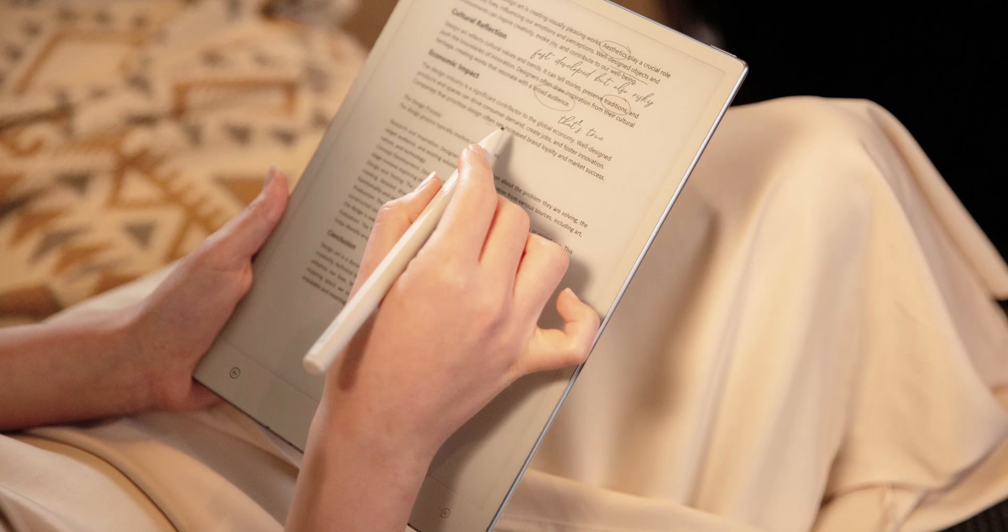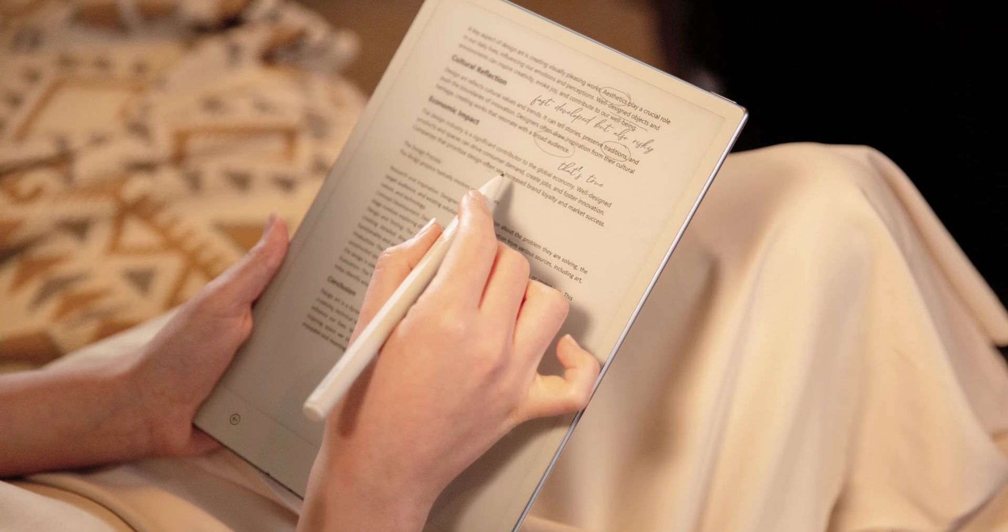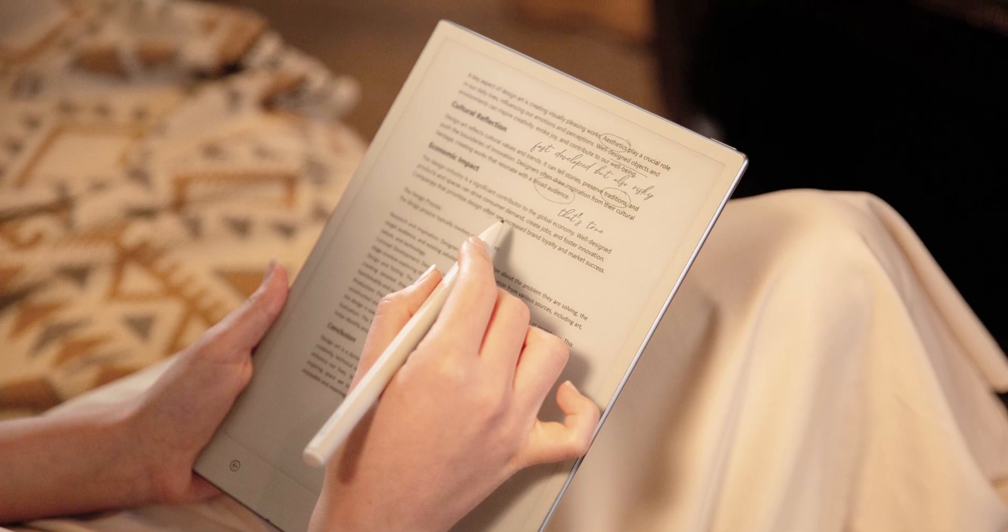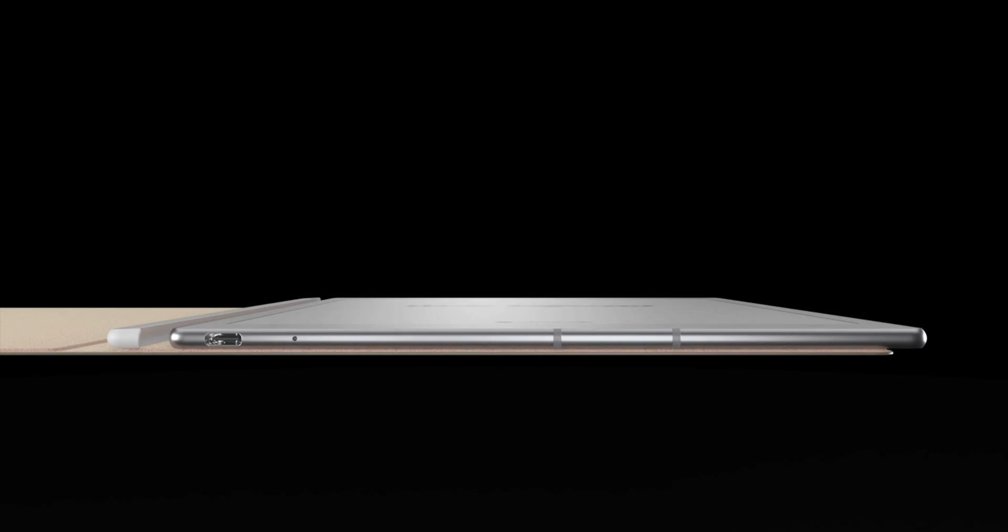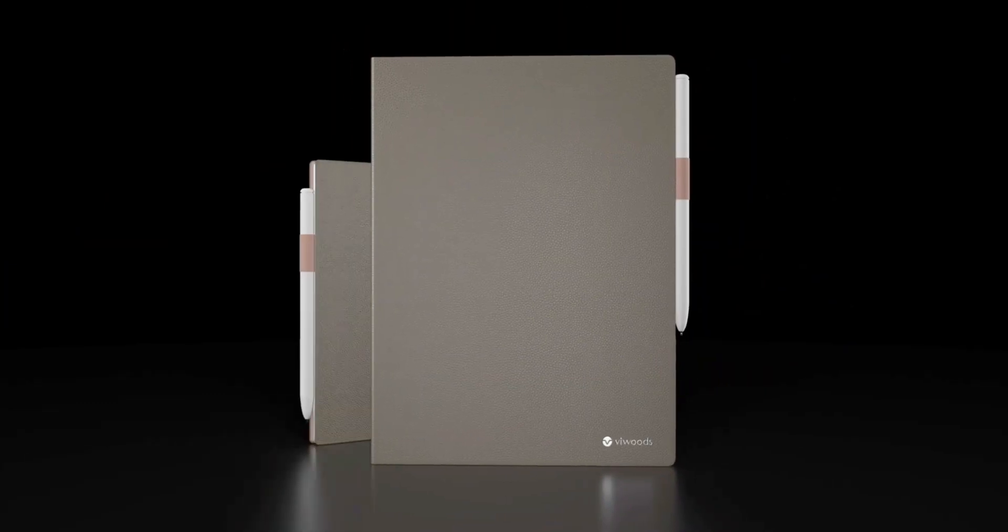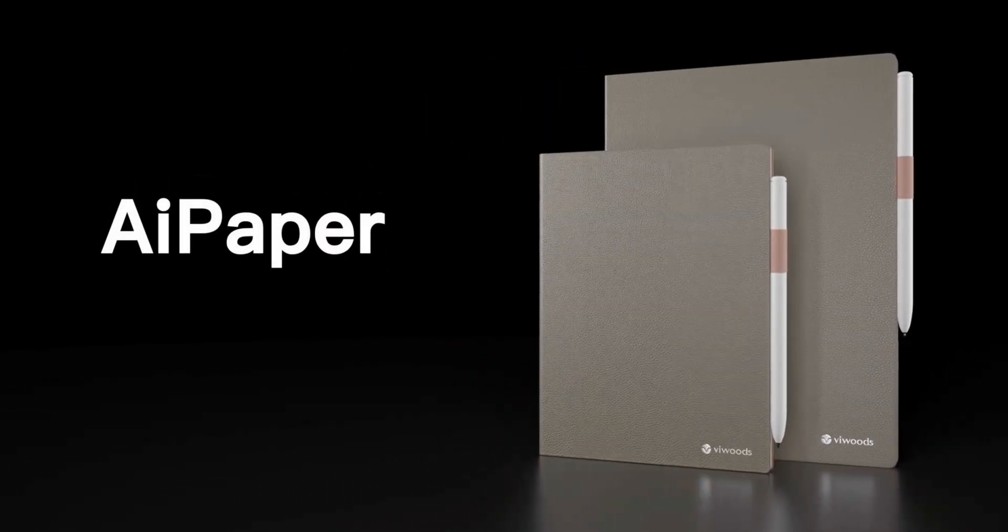Notable absences include a built-in screen light and external storage via SD media. To bring the AI Paper eNote to production, ViWoods has launched on Kickstarter. Pledges start at $489 for the 10-inch e-ink tablet, though there's also an 8.2-inch mini flavor up for grabs as part of the already funded campaign.